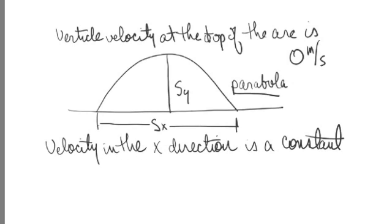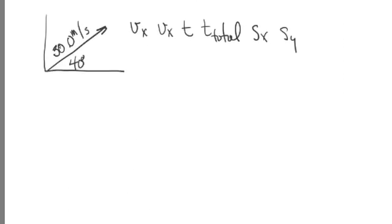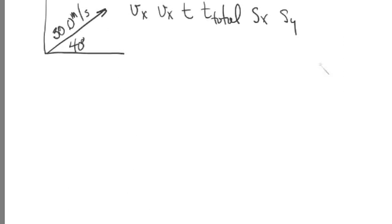I'm going to work a problem here and see how these values are calculated. We have an object with an initial velocity of 30 meters per second and an initial launch angle of 40 degrees. We're going to find V sub x, V sub y, T — the time to reach the top of the arc — T total, which is the time from the ground to the top and back down, the range S sub x, and the height S sub y.